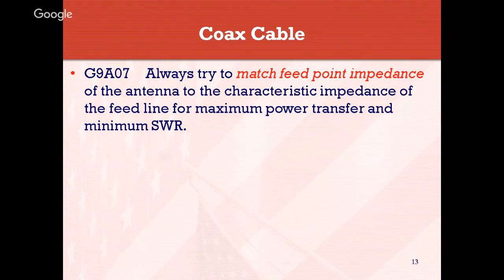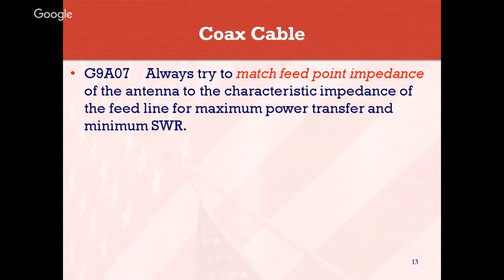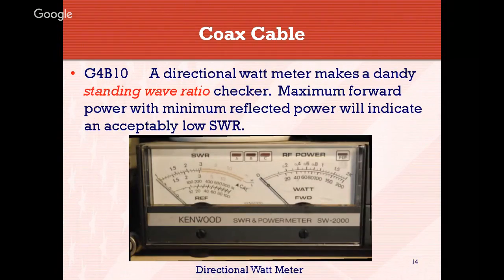You always want to try to match your feed point impedance of the antenna to the characteristic impedance of the feed line for maximum power transfer and minimum SWR. With the best match possible, you'll get maximum power transfer and minimum standing wave ratio, or reflected losses back to the transmitter. A directional watt meter makes a handy standing wave ratio checker — maximum forward power with minimum reflected power will indicate an acceptable low SWR.